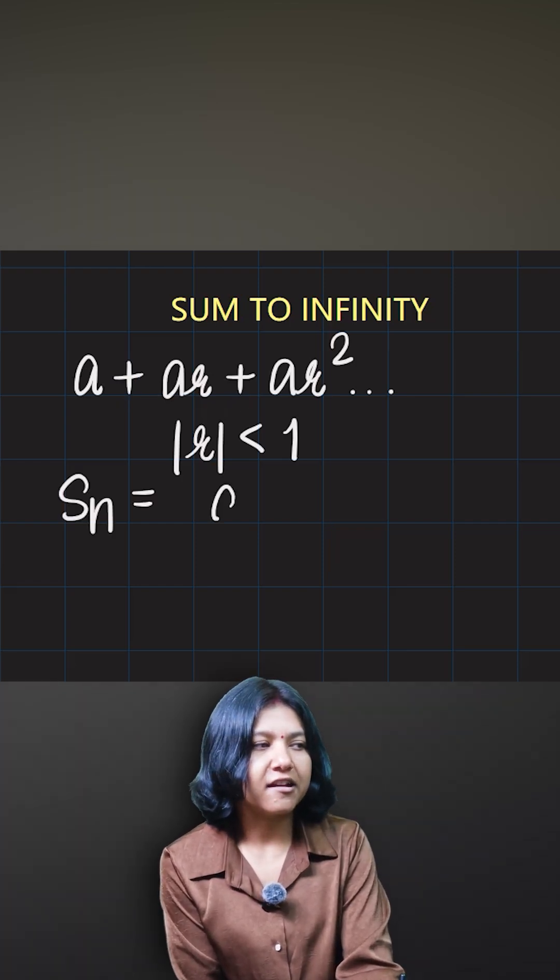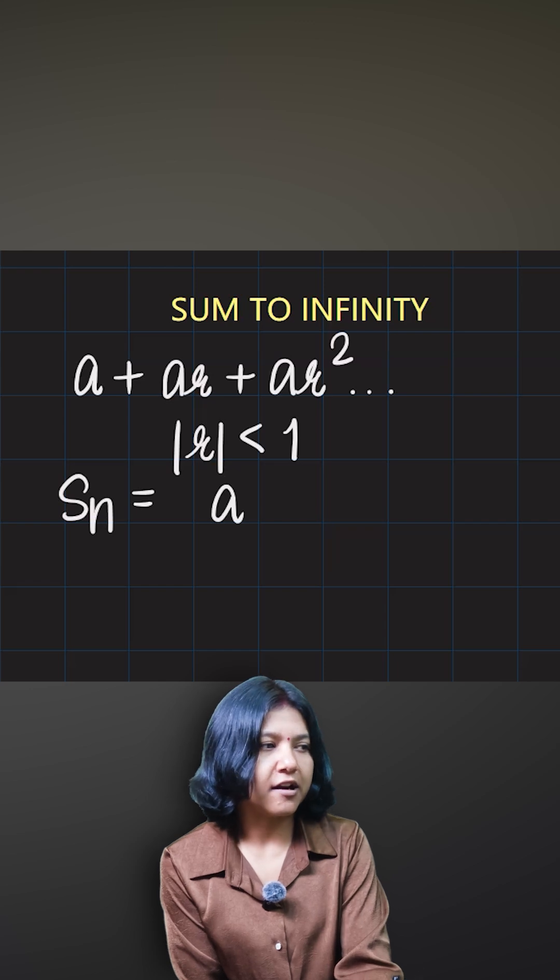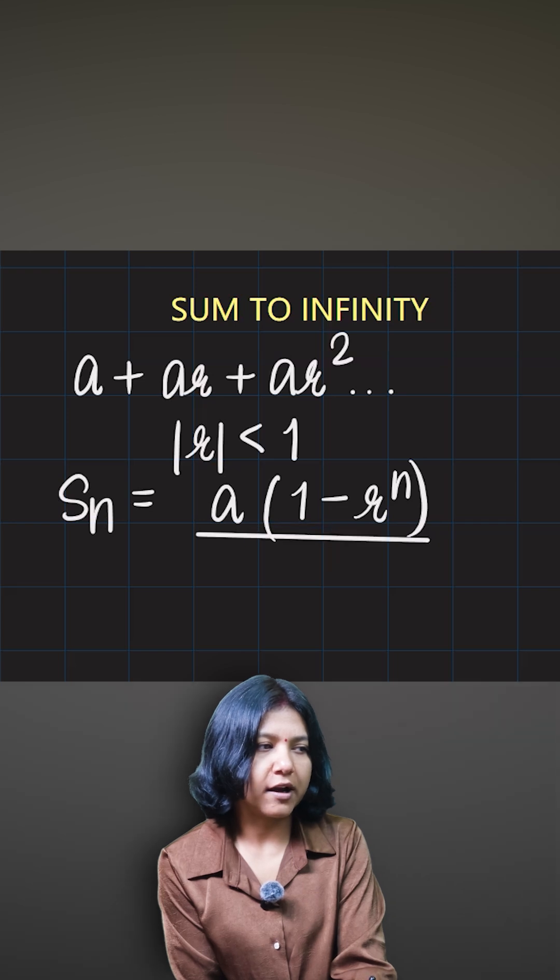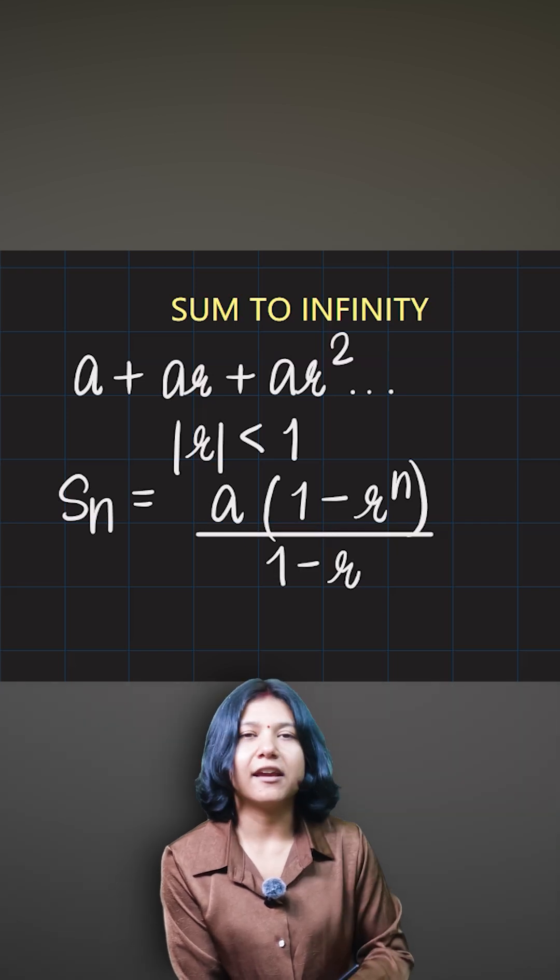The general way we find the sum for a geometric series is we multiply a, and when the value of r is less than one, then we always do one thing: that's one minus r raised to the power of n divided by one minus r.